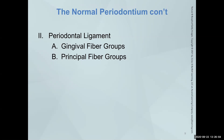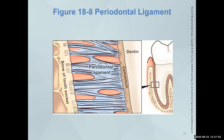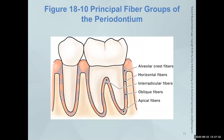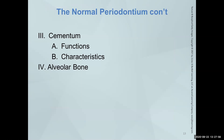Your PDLs — your gingival fiber groups and your principal fiber groups — you do need to know these. They are what connect everything together. Gingival fiber groups keep that gingiva tightly bound around the tooth. Principal fiber groups hold the tooth into the alveolus or socket. The groups by location are: alveolar crest, horizontal, oblique, apical, interradicular, and transeptal — tooth to tooth. Know what they are and what they do.